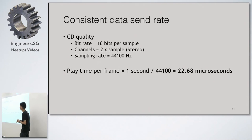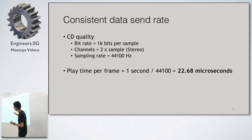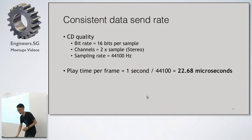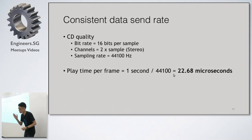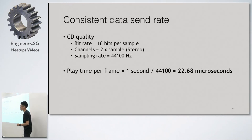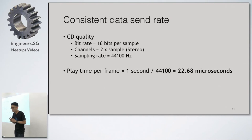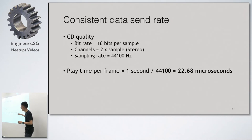A key concern is maintaining a consistent data send rate. Typical CD quality is 16 bits per sample, two channels (left and right), and a sampling rate of 44,100 Hz. This means you need to play each sample within 22.68 microseconds, and you cannot deviate too far from this or the audio will be distorted. On modern computers this is actually very difficult to achieve — it's easy on a microcontroller, but much harder for a general-purpose processor.